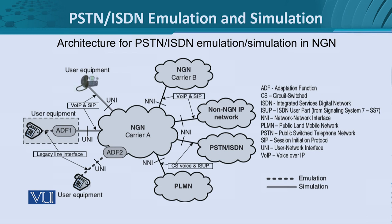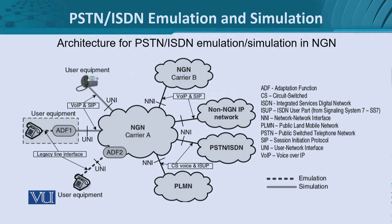The user-to-network interface for simulation implements VoIP and SIP-based services. At the top, we have IP-based user equipment that smoothly implements the user-to-network interface by directly using VoIP and SIP. For the non-NGN-based IP network, using VoIP and SIP is possible, but having access to the complete suite of NGN services is not. Below, we have the public land mobile network with circuit-switched voice and ISUP, which is connected to NGN by the network-to-network interface (NNI). The NNI allows different networks to be interoperable, but to make devices truly compatible with NGN, we need to emulate or simulate the services as in NGN.